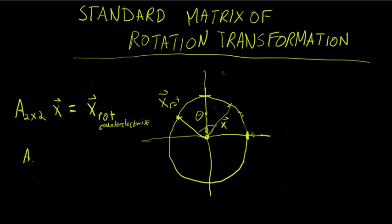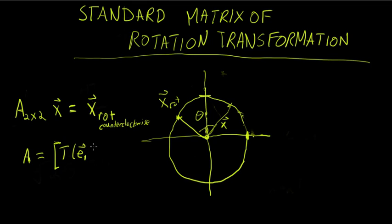Hopefully you remember that for any linear transformation, the standard matrix is given as follows: the first column is what the transformation does to the E1 basis vector, and the second column is given by what it does to the E2 standard basis vector.